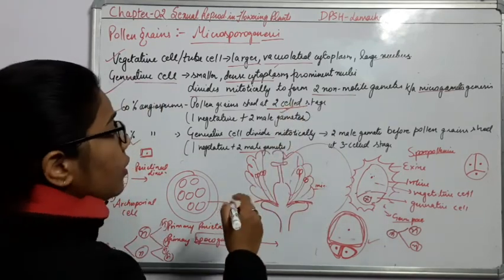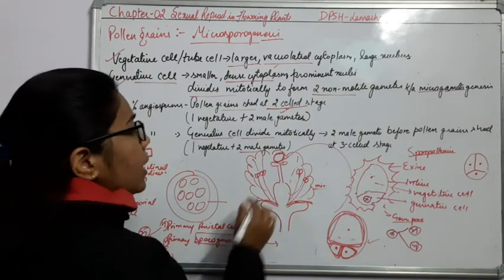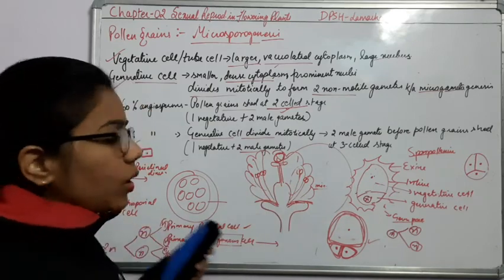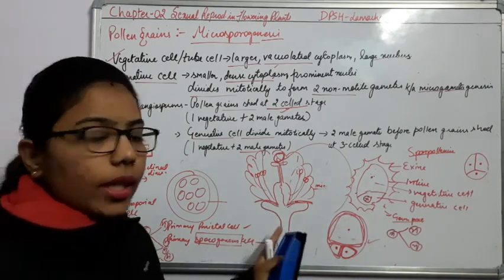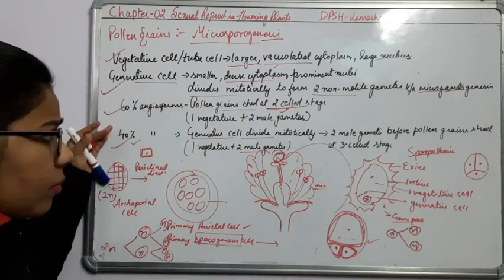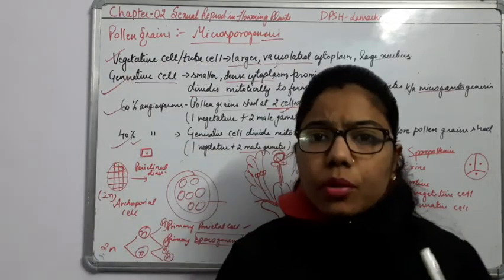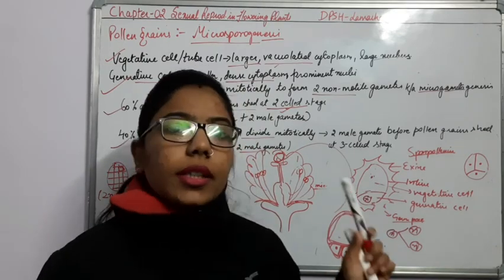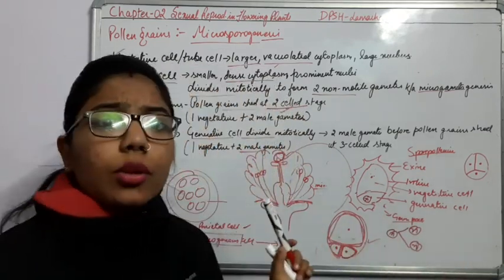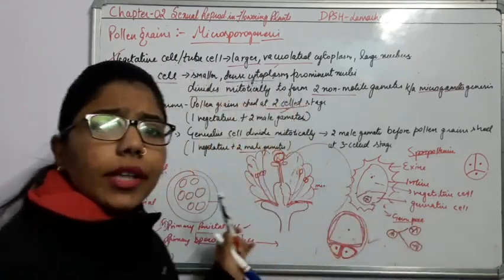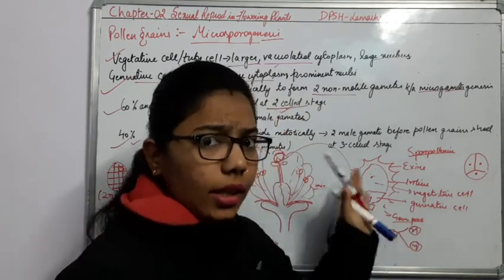When the pollen grain reaches in the stigma of the female gametophyte, the generative cell will send two nuclei — with the help of the pollen tube — inside the pollen tube, and it will reach into the ovary of the female gametophyte. So here we have completed the mechanism of the pollen grains — how it reaches from the male gametophyte to the female gametophyte. The first significance is sexual reproduction — if there is no formation of pollen grains, no sexual reproduction will take place.